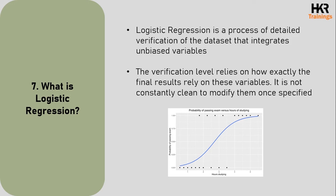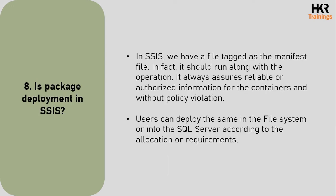The next question: what is logistic regression? Logistic regression is a process of detailed verification of a data set that integrates unbiased analysis. The verification level relies on how exactly the final results depend on the input variables. It is not always straightforward to modify these variables once specified.